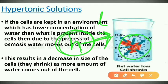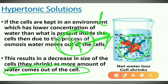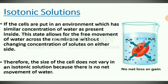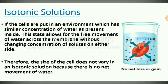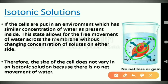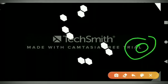Water moves from the cell towards the environment in a hypertonic solution. This results in a decrease in size of the cells — they shrink as more water comes out of the cell. For the isotonic solution: if the cells are put in an environment which has a similar concentration of water as present inside, this allows for the free movement of water across the membrane without changing the concentration of solutes on either side. Both outer and inner concentrations are the same, so movement is freely balanced. That type of solution is called an isotonic solution.